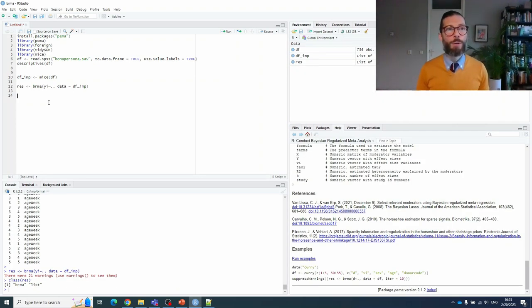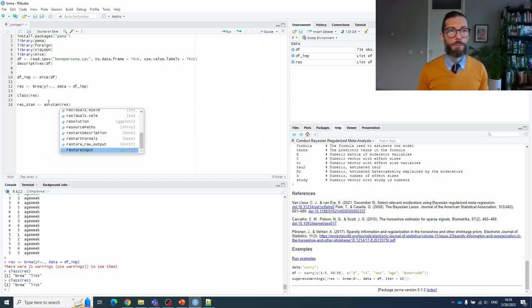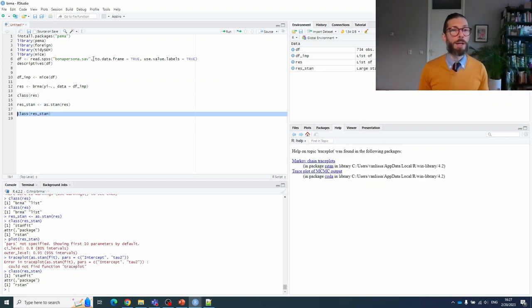If we examine the class of the res object, we'll see that it's a brma object. But we can easily convert this to a STAN fit object, which allows us to use all of the other convenience functions that exist for such objects. So let's make a copy called res stan, and to that we assign as stan of res. The class of this object is stan fit. And this allows us to use all of the convenience functions associated with stan objects. So if we load the library rstan,